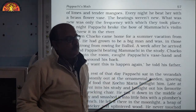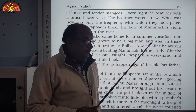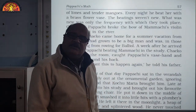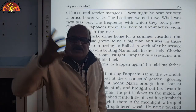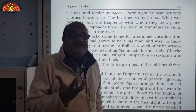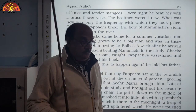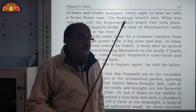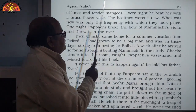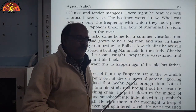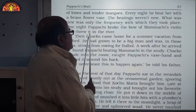One night Papaji broke the bow of Mamachi's violin and threw it in the river. Earlier, when he was getting his training in Vienna in technology, his wife was there learning violin. One day he came to know from her teacher that she was really talented and had a very bright future as a violinist. Papaji could not bear it, grew angry, broke her violin bow, and threw it in the nearby river.